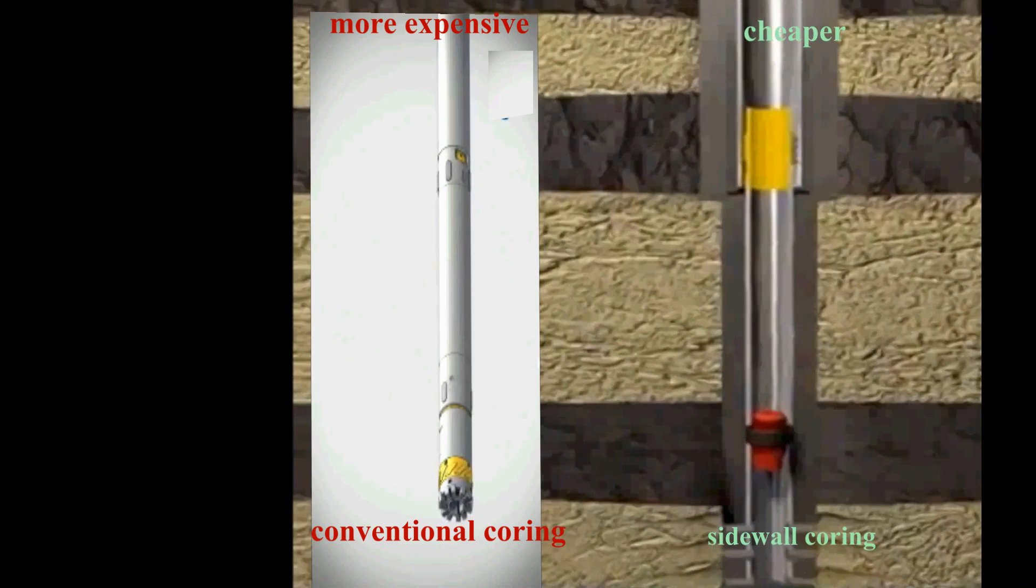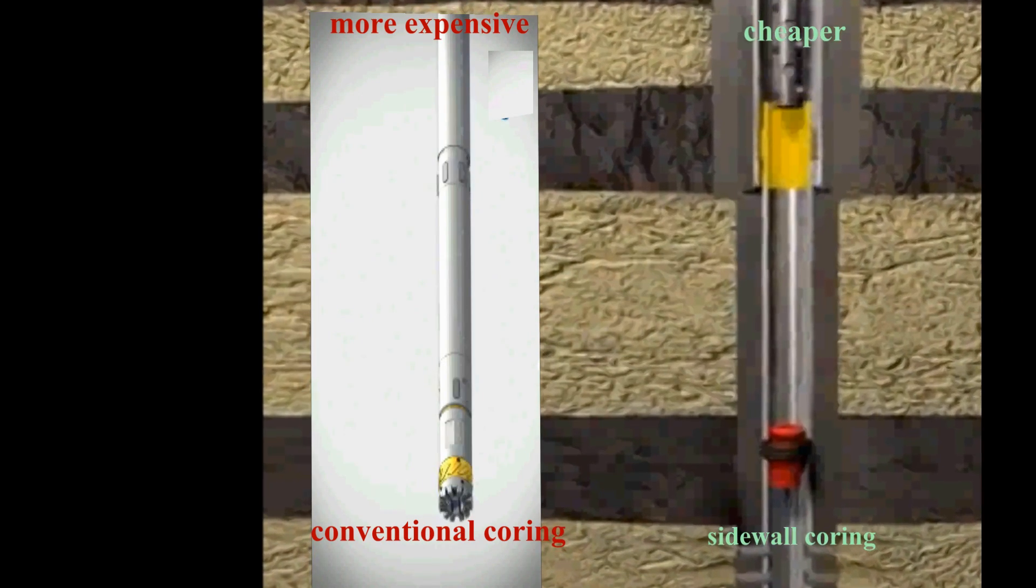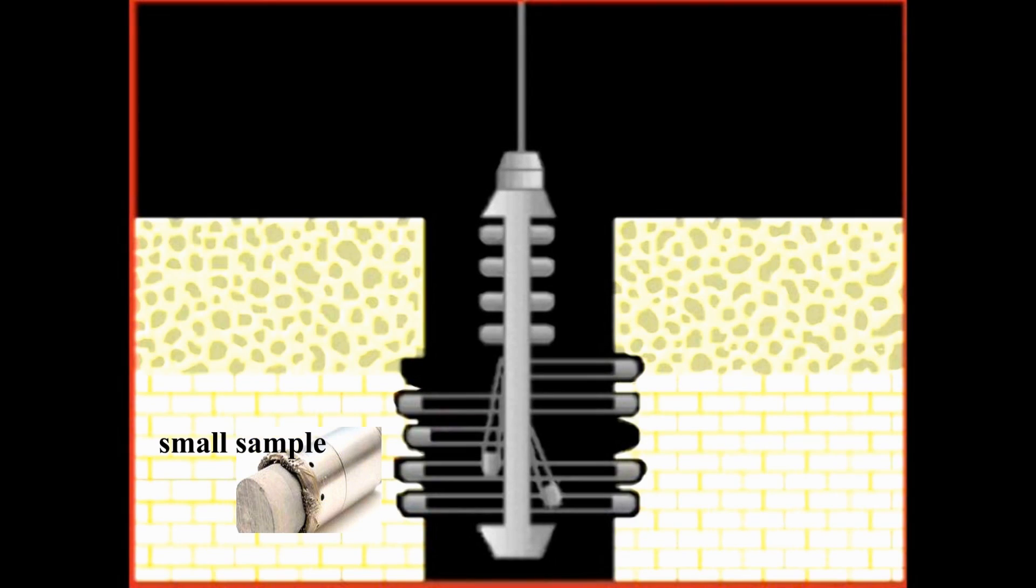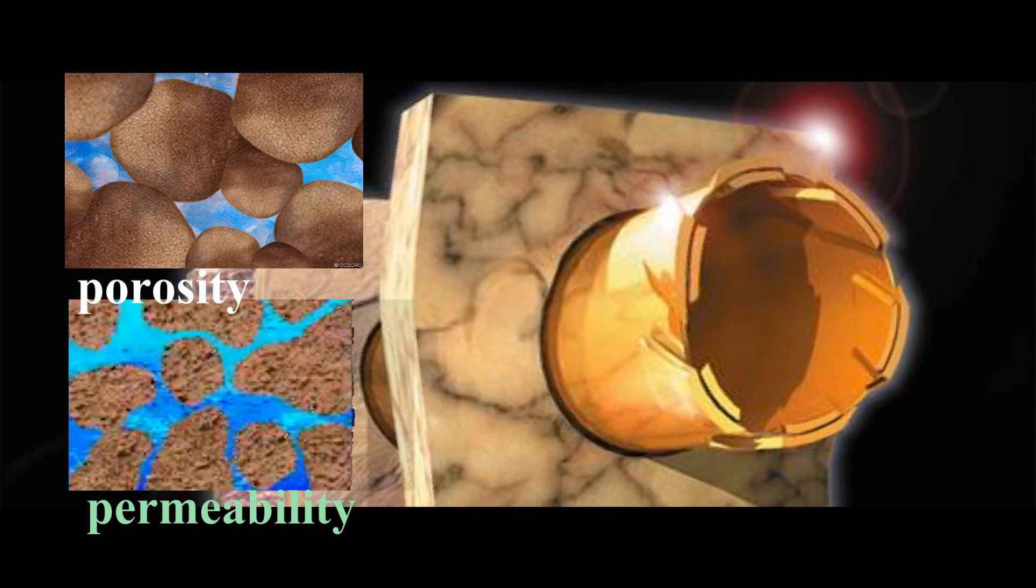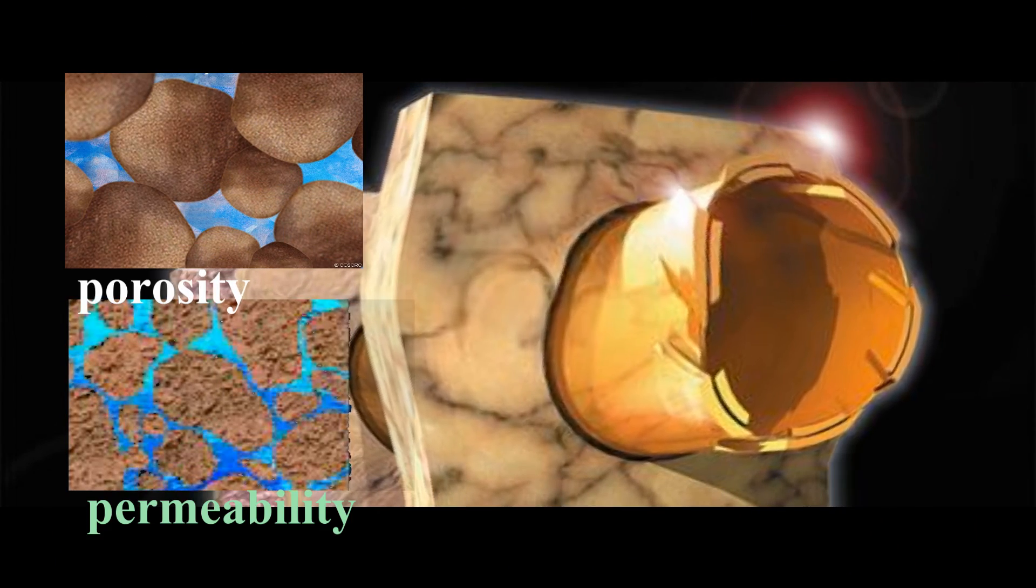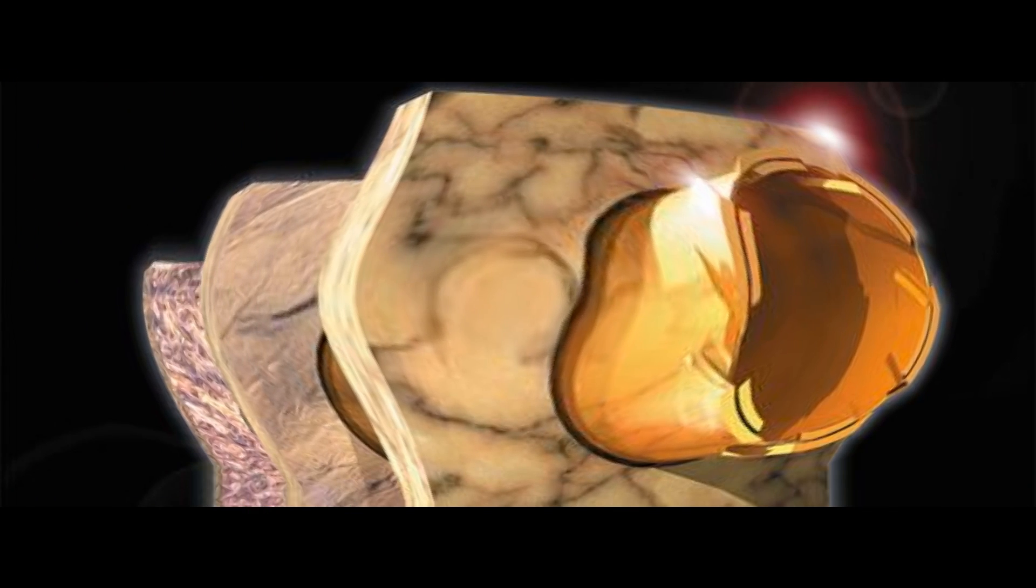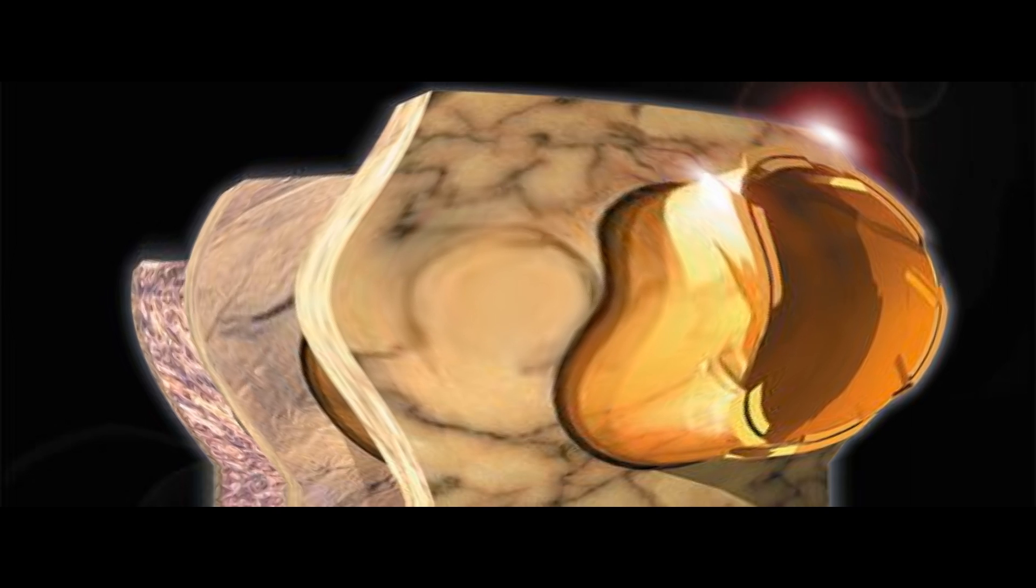Although a much cheaper alternative to conventional coring, sidewall coring is less informative than conventional cores. For example, measurements for porosity and permeability can be compromised in sidewall testing because the impact of the fired cylinders can cause crushing and compaction.